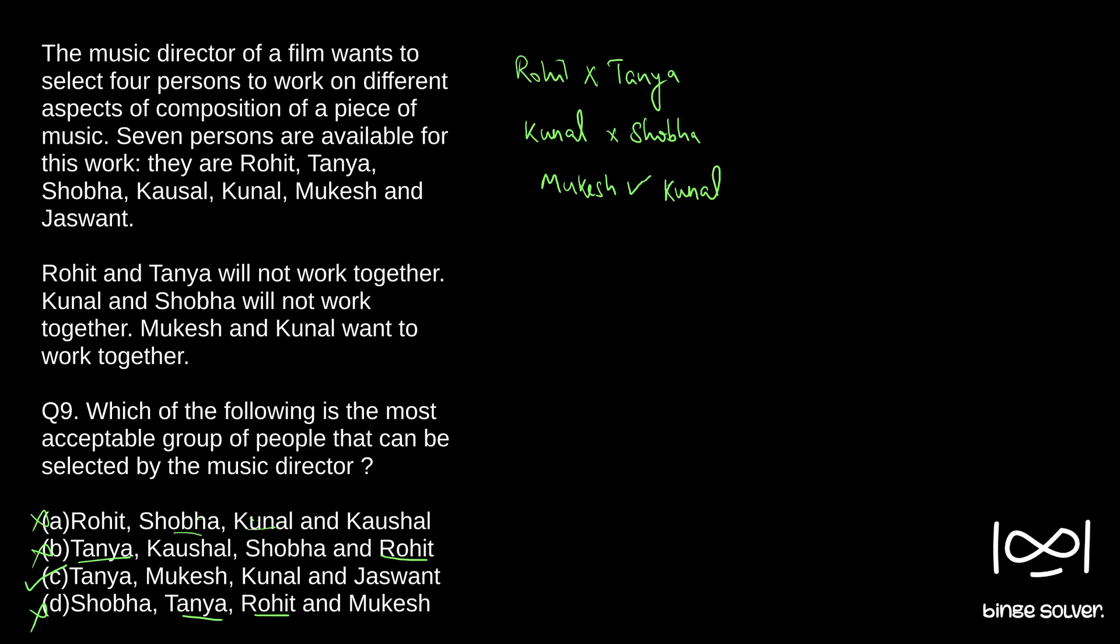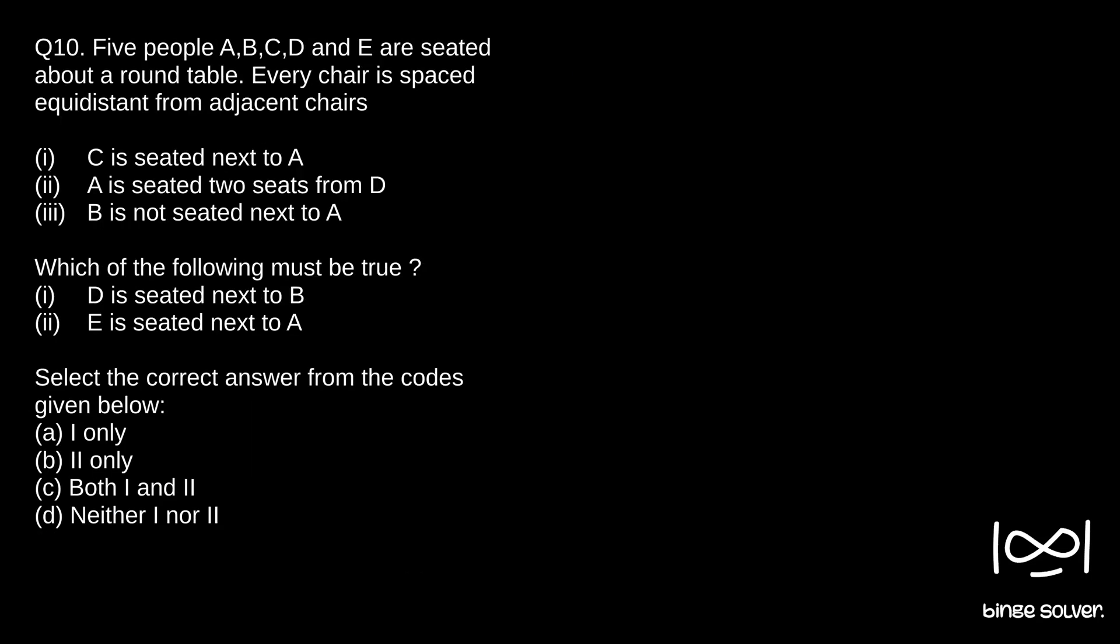Next question. Question 10. Five people A, B, C, D and E are seated around a round table. Every chair is spaced equidistant from adjacent chairs.